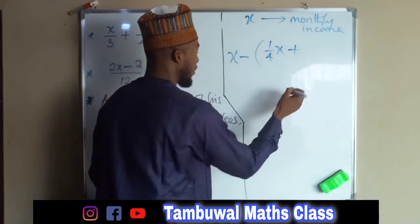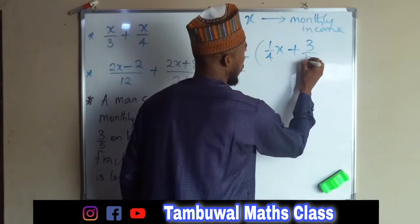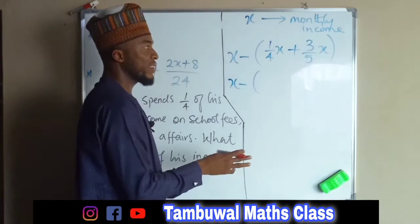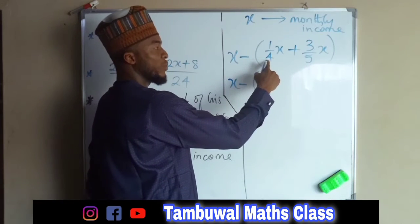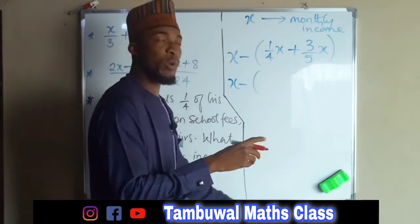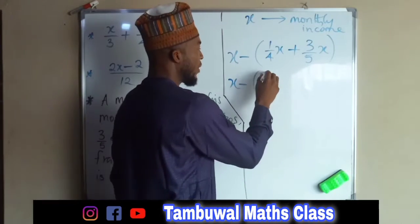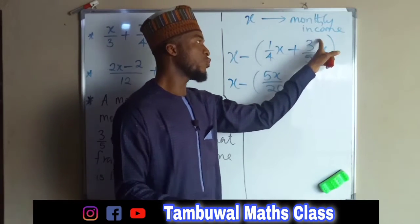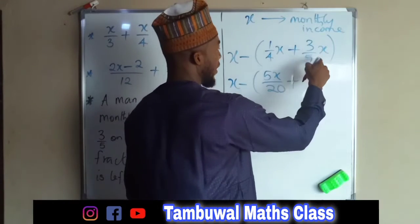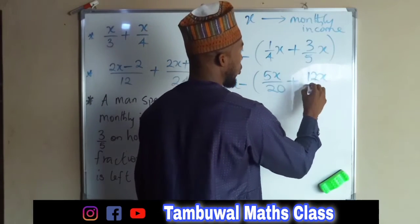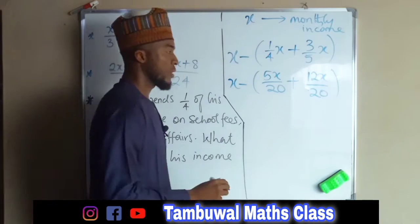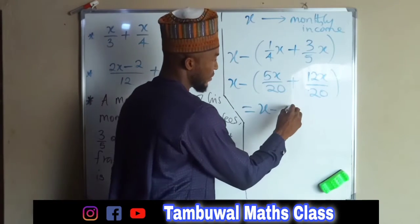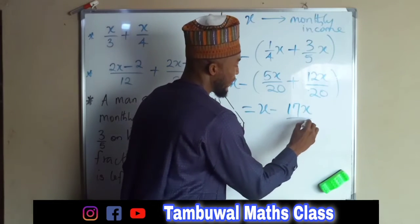The total spendings are one-fourth of x plus three-fifths of x. So this is x minus the expression in parentheses. We want a common denominator: multiplying the first fraction by 5 gives 5x over 20, and multiplying the second by 4 gives 12x over 20. This equals x minus (5x plus 12x), which is 17x over 20.